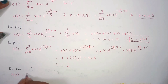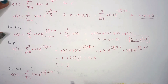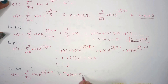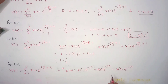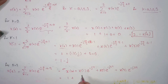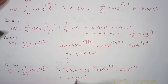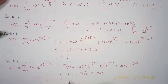For k equals 2, X(2) equals summation from n equals 0 to 3 of x(n) times e to the power of minus jπ/2 times n times 2. Expanding: x(0) plus x(1) times e to the power of minus jπ plus x(2) times e to the power of minus j2π plus x(3) times e to the power of minus j3π. With x(0) equals 1, e to the power of minus jπ equals minus 1, and x(2), x(3) equal 0, we get 1 plus (1)(minus 1) equals 0. So X(2) equals 0.